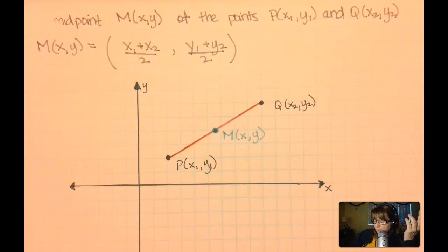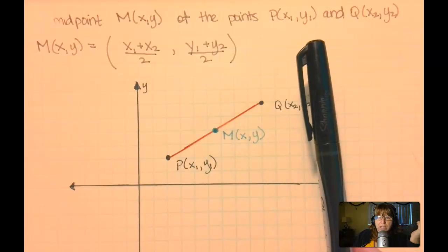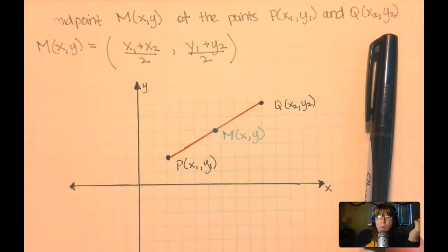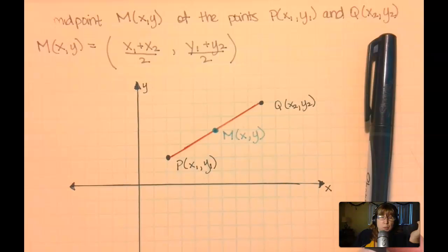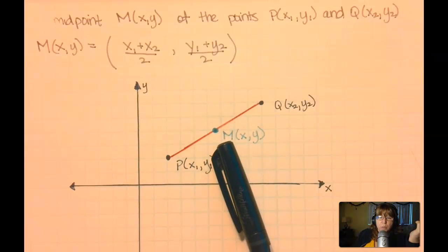So here I have points, we'll just call them P and Q, and they have the coordinates of x1, y1 for the P point, and x2, y2 for the point Q. And I've just randomly drawn them on the graph and connected them with the red line.